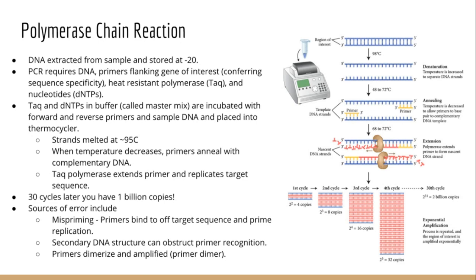First, RNA is extracted using a commercially purchased kit, which has been streamlined to the point where you simply follow a couple of bullet points. Then we obviously need the DNA we intend to clone, and we need our primers — this is where the specificity of the reaction is determined. Primers are short 20 base pair chemically synthesized oligonucleotides typically ordered from a commercial company.